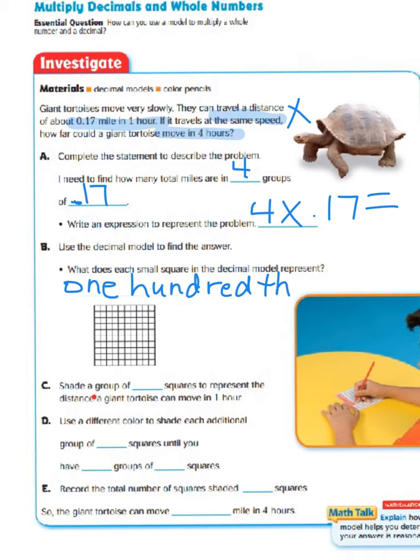So, we are going to shade a group of, and that's going to go back to our 1/100ths. So, we're going to shade a group of 17 squares to represent the distance a giant tortoise can move in one hour. So, let's go over to our decimal model, and let's shade in our 17 squares.